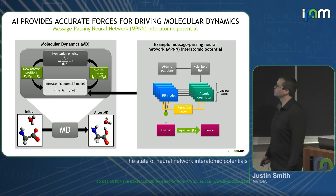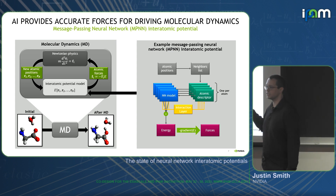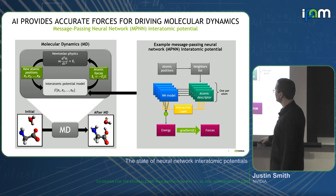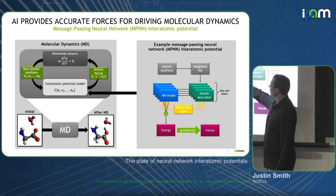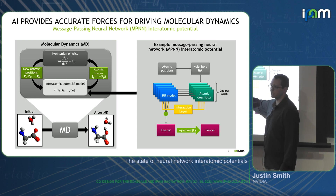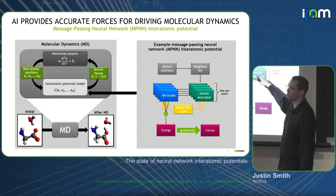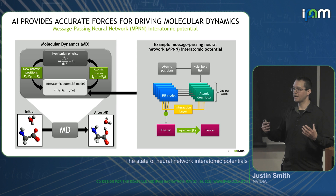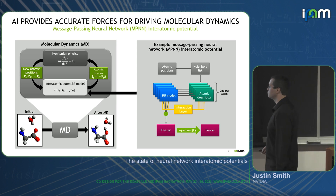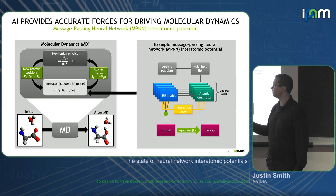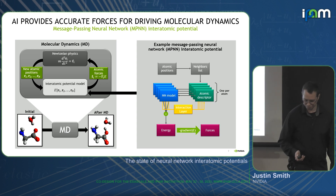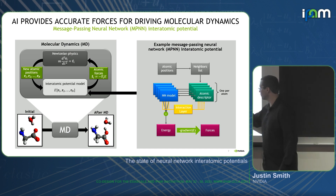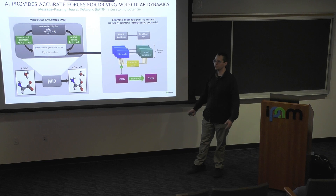There are other types of neural network interatomic potentials besides the one I just showed. There are graph convolution neural network models. The idea is that out of the end of your neural network you don't just get an energy — you get something like a latent space that feeds back and tells you how to build your descriptor. So now your descriptor is no longer fixed; it's based on feedback from the local chemical environment. By doing this, you effectively get longer-range interactions implicitly from the model. The negative gradient of energies equals forces, and you can use this in MD simulations.